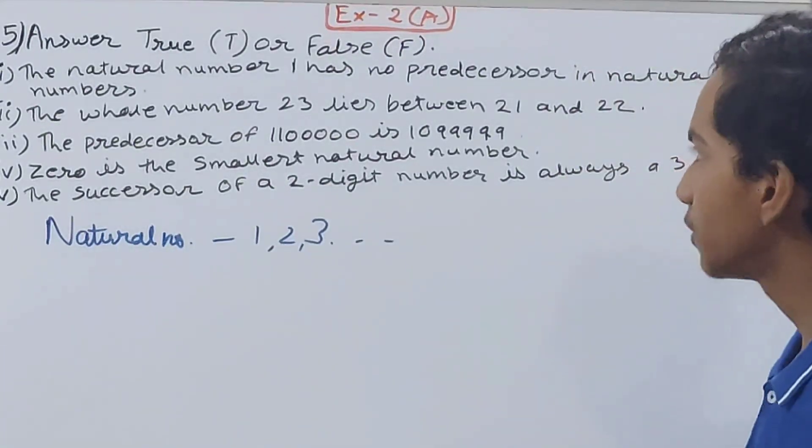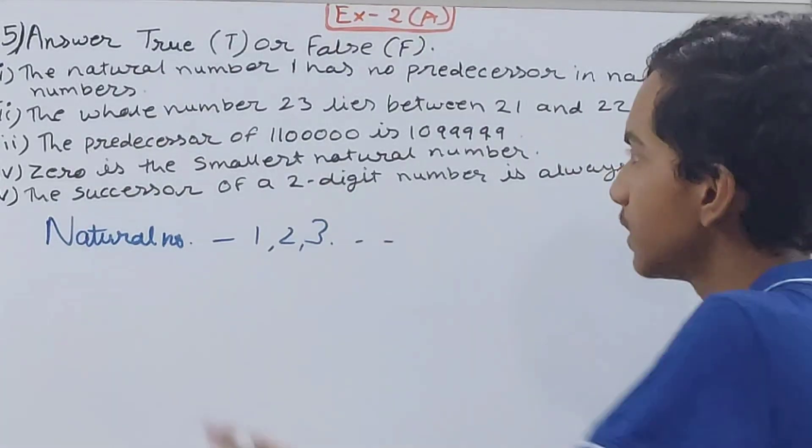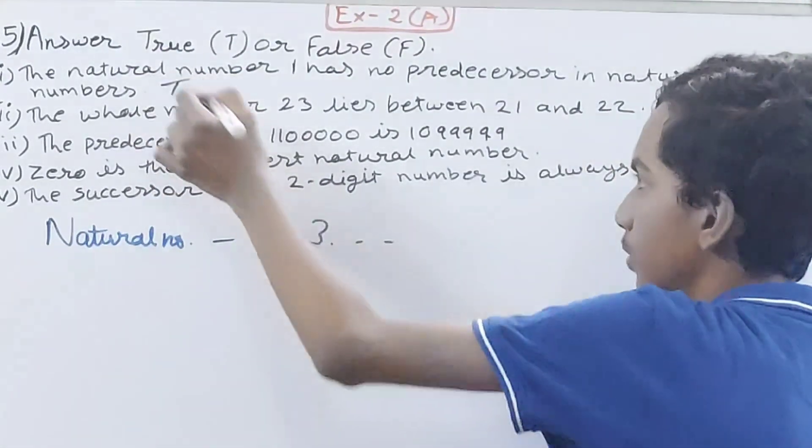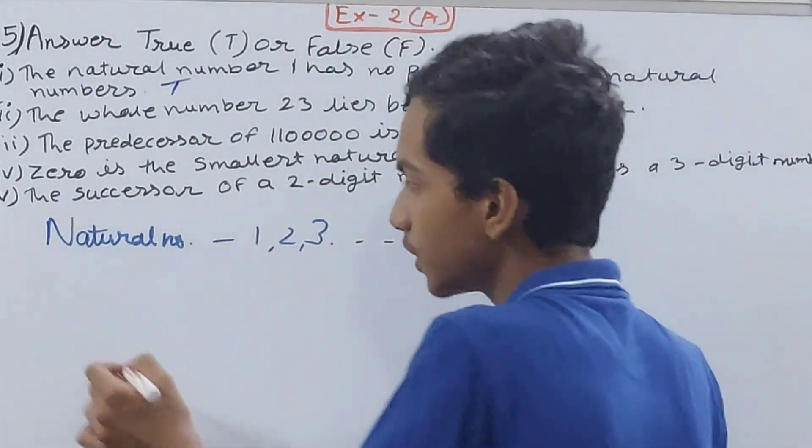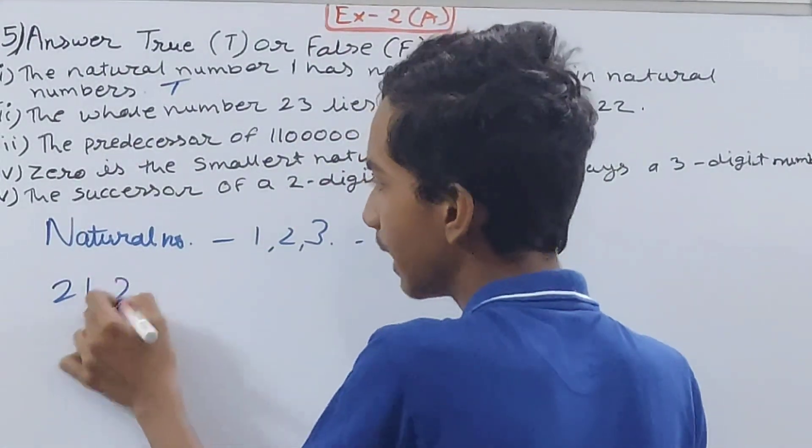Right, that means there is no predecessor. If it was in whole numbers, then it would have been 0. But here, natural number 1 has no predecessor, so this statement is true.